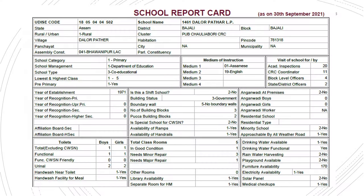Here is an example of a school report card for a school in Bajali district of Assam. A UDISE code is given to the school report card — there are state codes, district codes, and block codes to distinguish between different school report cards. Details available include the village, school category (primary or secondary), whether it is co-educational, lowest and highest classes, and whether it has pre-primary sections — important for tracking early childhood education policy for children aged 3 and 4.